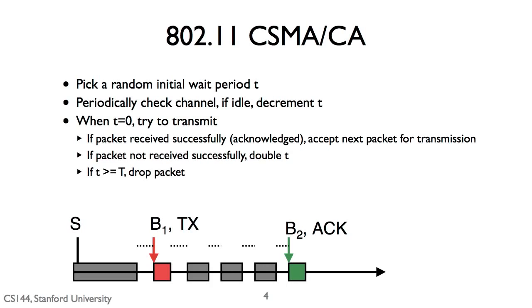And so here's a little walkthrough. So here's our sender S, and it picks an initial T value here. T, the channel here is busy, so it's not decrementing T. It starts decrementing T. T becomes zero here.